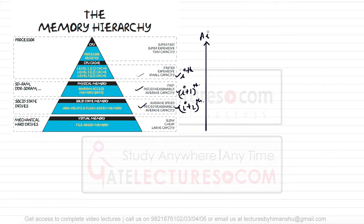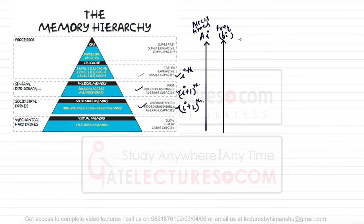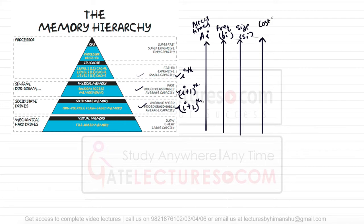We are going to take a few variables. The first variable is 'ai', representing the access time of each level. The second variable is 'fi', the frequency — how many times that particular level will be referred to. The third variable is 'si', representing the size, and the fourth variable is 'ci', the cost per bit. So we have: access time, frequency, size, and cost per bit for these levels.